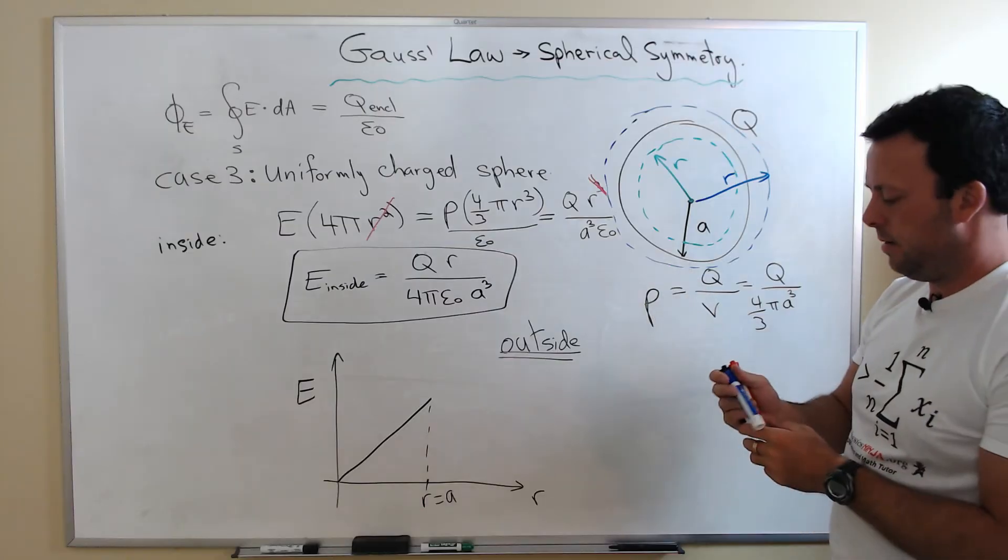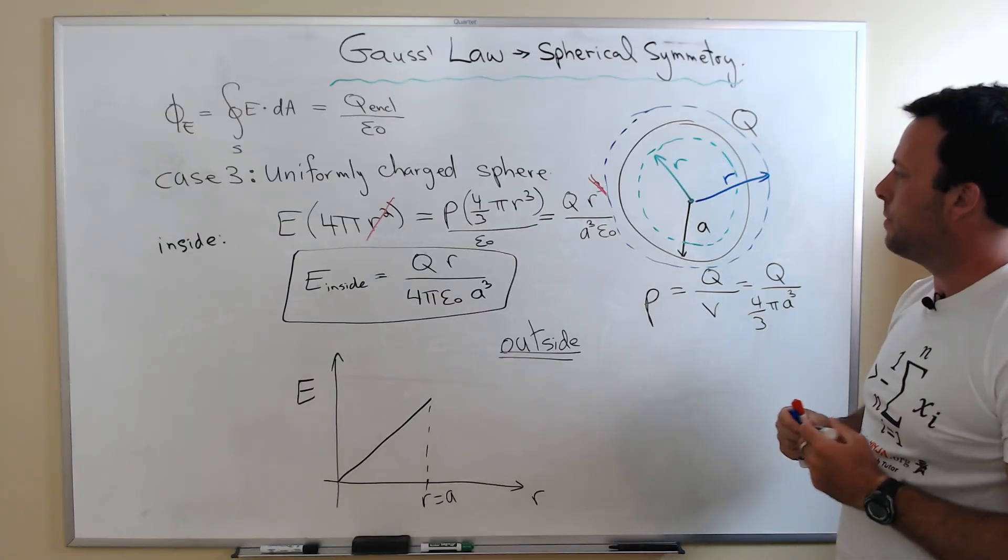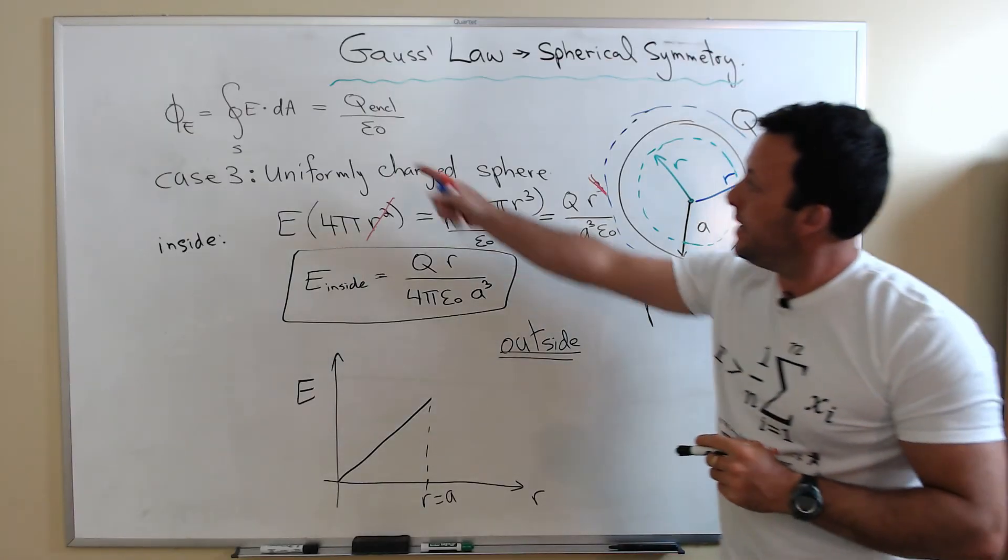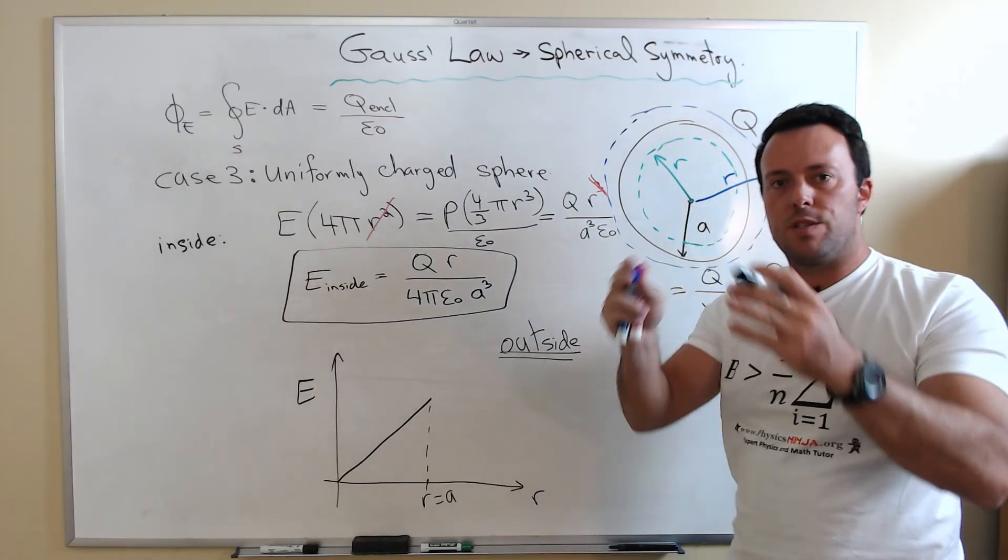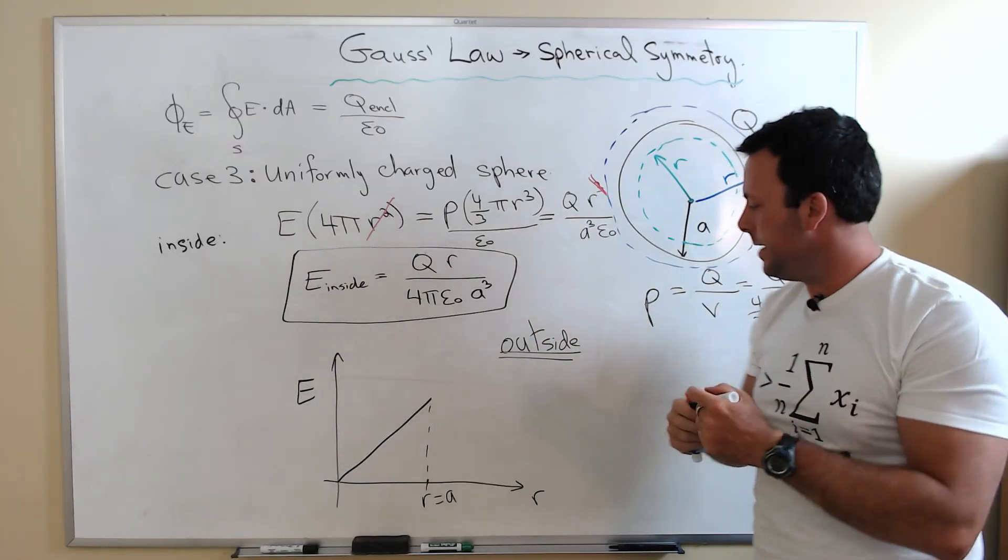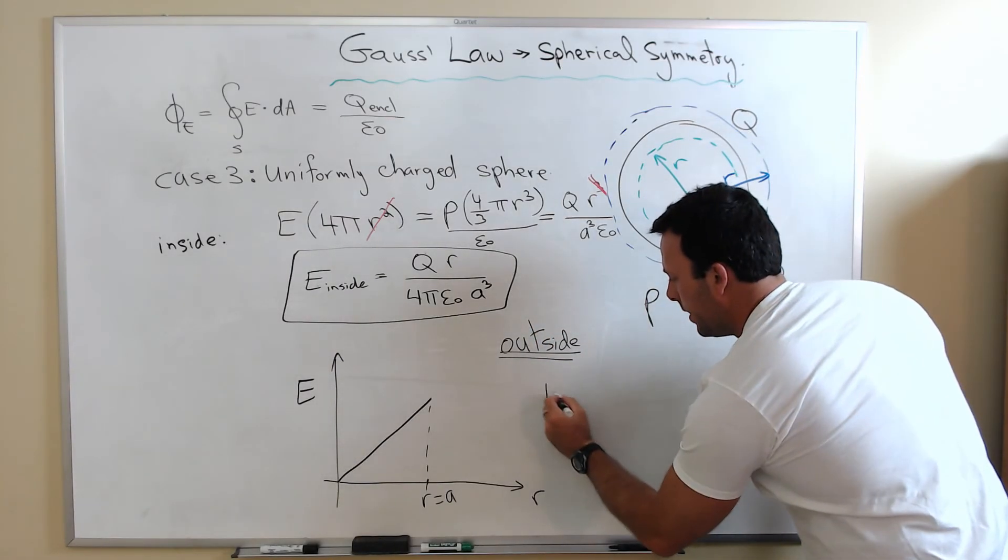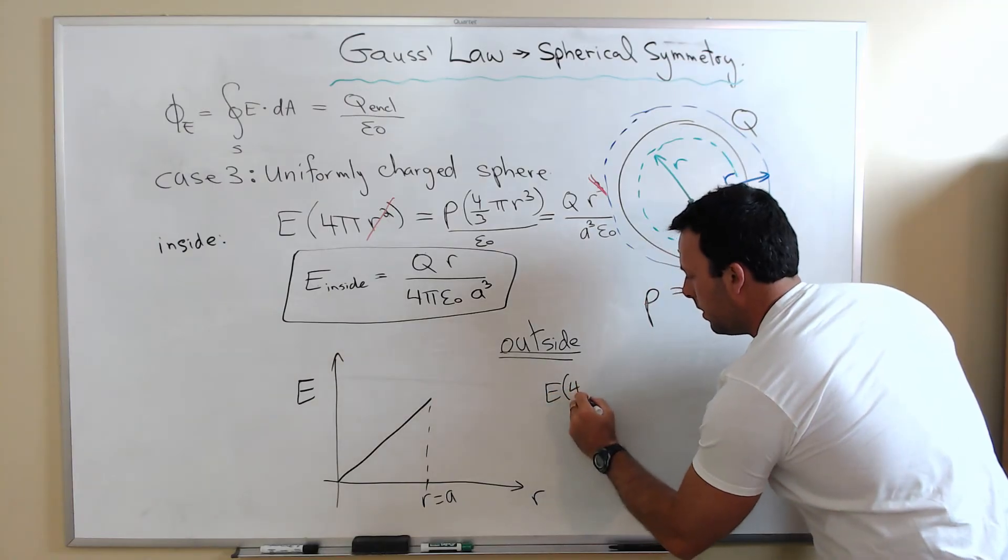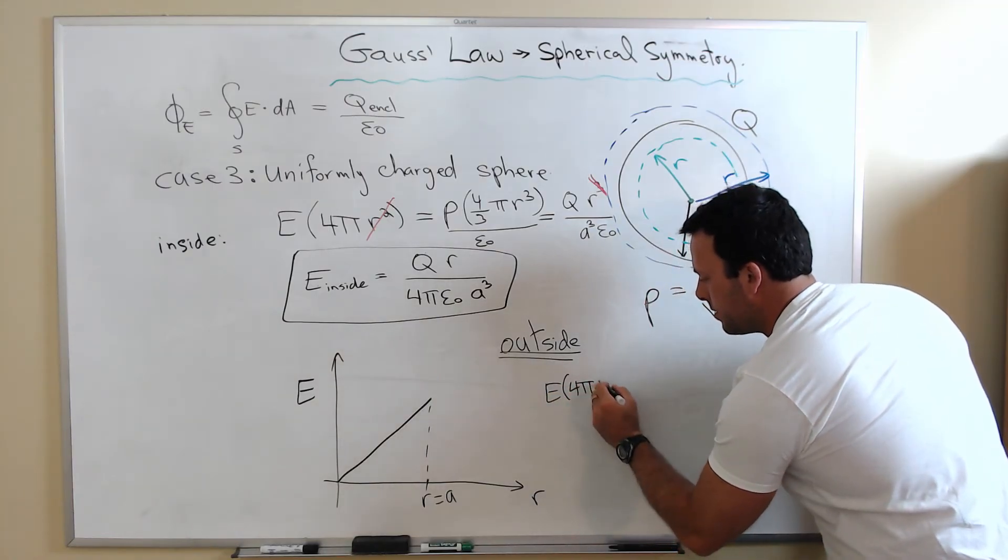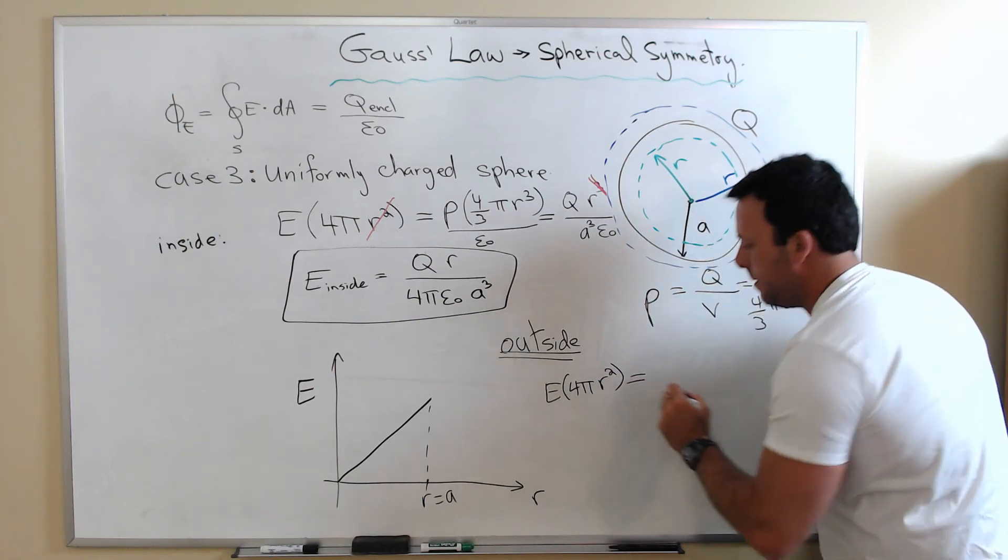The left-hand side of Gauss's law, again, we're dealing with a spherically symmetric object. It's always the same. So we have electric field times the area of our Gaussian surface.